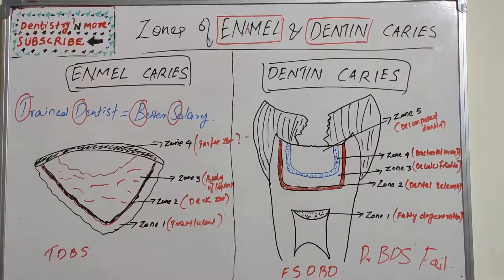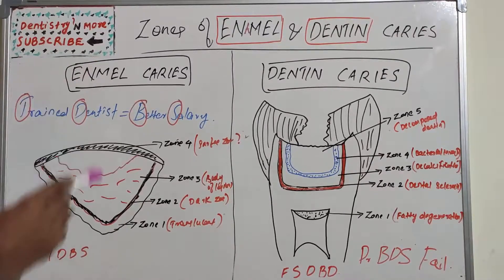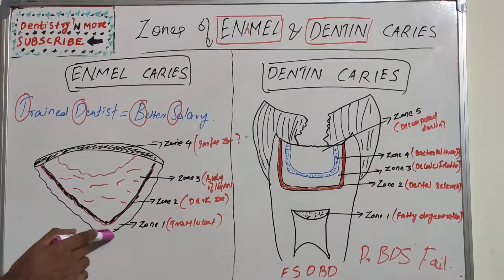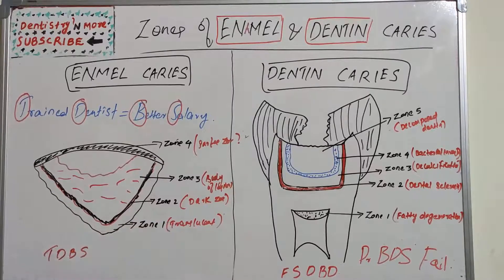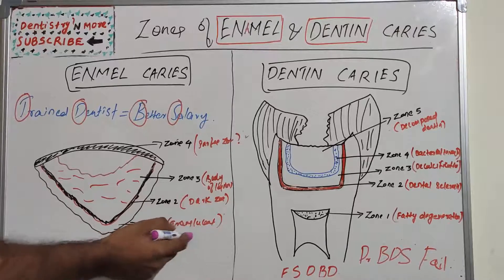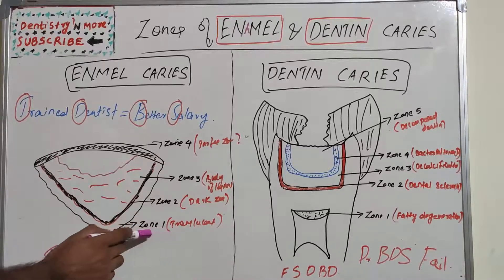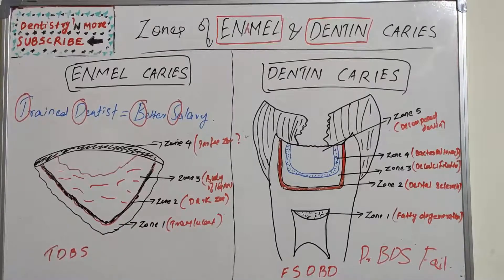Starting with the zones of enamel caries: Zone 1 is present at the advancing front of the lesion. This is known as the translucent zone. It is very porous — about 10 times more porous than sound enamel — because it is a highly demineralized area. The translucent zone is not always present in all caries lesions; sometimes it is present, sometimes it is not.